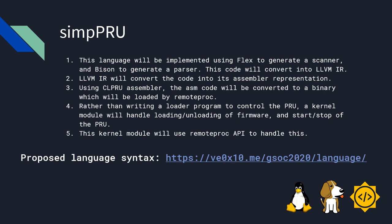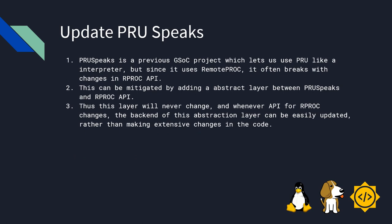Coming to the next goal — updating PRU speaks to run with the latest kernel. PRU speaks is a previous GSoC project which lets us use the PRU like an interpreter. But since it uses remote proc, it often breaks with changes in the RProc API. This can be mitigated by adding an abstraction layer between PRU speaks and the RProc API. This layer will never change, and whenever the API for RProc changes, the backend of this abstraction layer can be easily updated rather than making extensive changes in the code of PRU speaks.